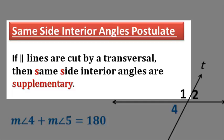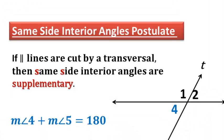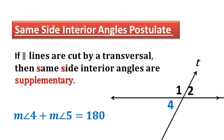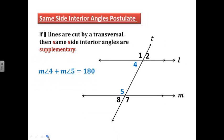Now let's look at the same side interior angles postulate — the only one that's different. I remember this one because 'same' starts with S, 'side' starts with S, and 'supplementary' starts with S. Same side interior angles are supplementary if we have parallel lines. So angle 4 and angle 5 add up to 180, and the measure of angle 3 plus the measure of angle 6 also equals 180.